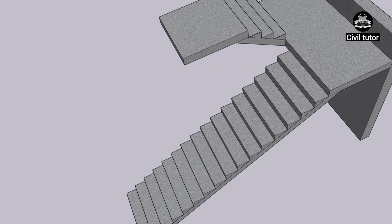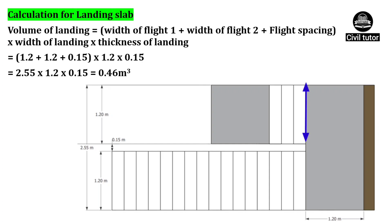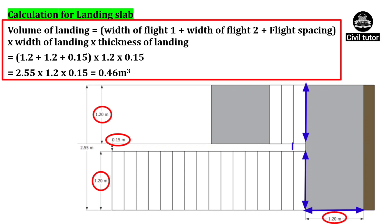Now we need to do the calculations for the landing slab. Volume of landing will be equal to width of flight 1 plus width of flight 2 plus spacing between two flights, multiplied by width of landing multiplied by thickness of landing. Width of each flight is 1.2 meter, spacing between two flights is 0.15 meter, width of landing is 1.2 meter, and thickness of landing is 0.15 meter. On substituting these values, the volume of landing will be equal to 0.46 meter cube.